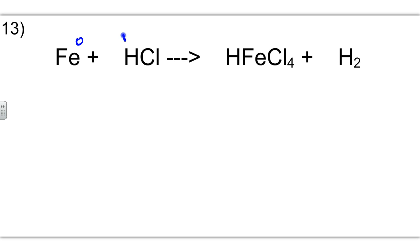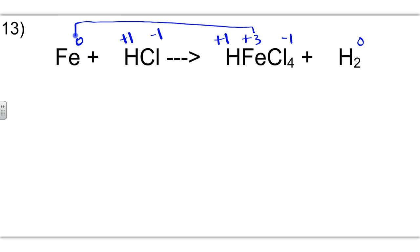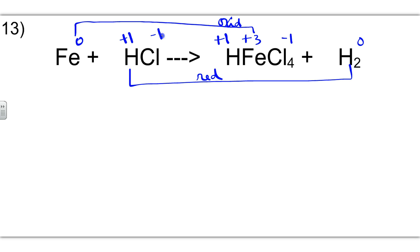Below is our final answer. Now for the next problem: iron is neutral. Hydrogen is plus 1, chloride is minus 1. 1 times 4 is negative 4, so this will be a plus 3 and this will be neutral. So our iron undergoes oxidation, and our hydrogen undergoes reduction. Now we'll write our half-reactions. We're going to add the electrons to the right-hand side, because plus 3 is a higher oxidation state than 0.